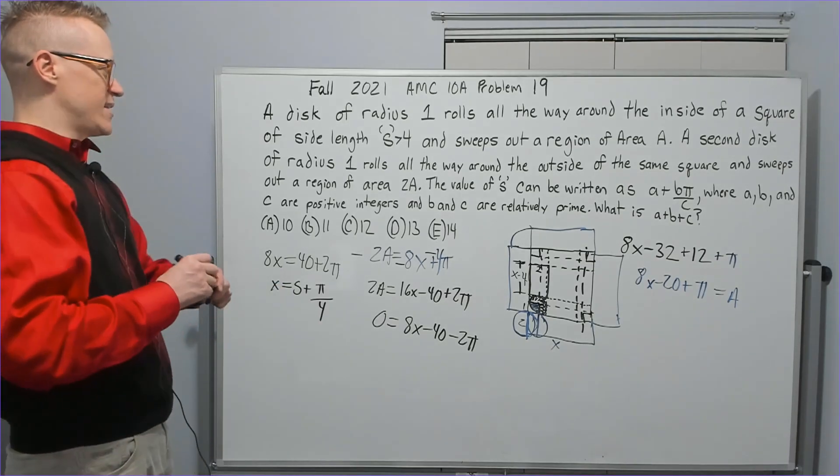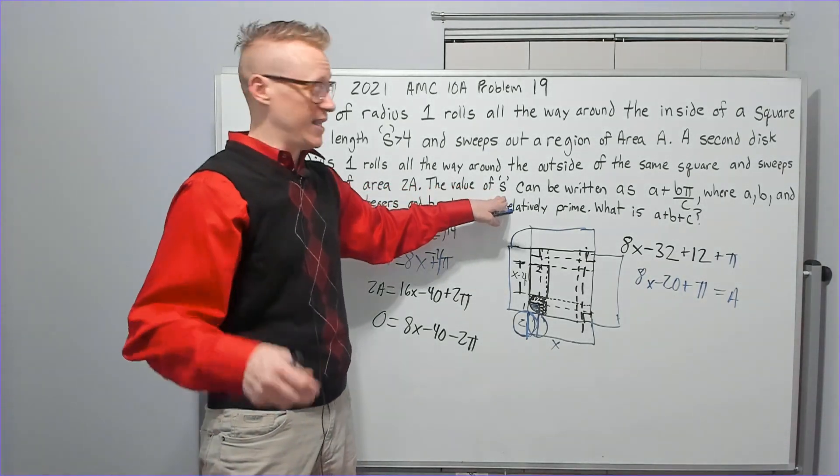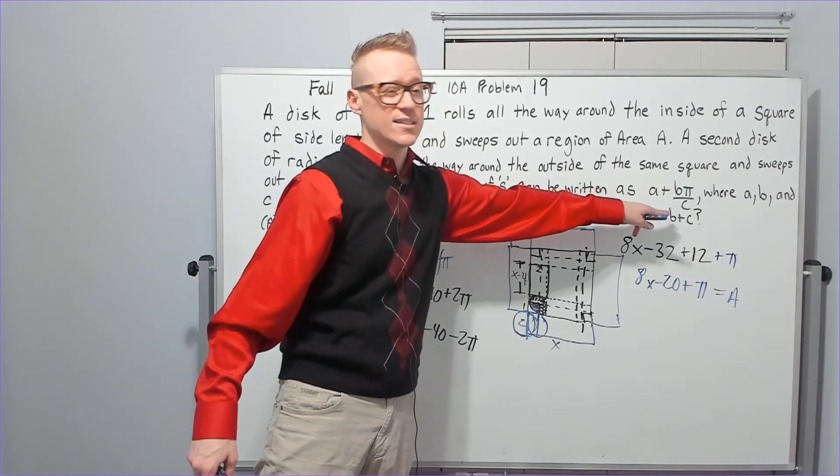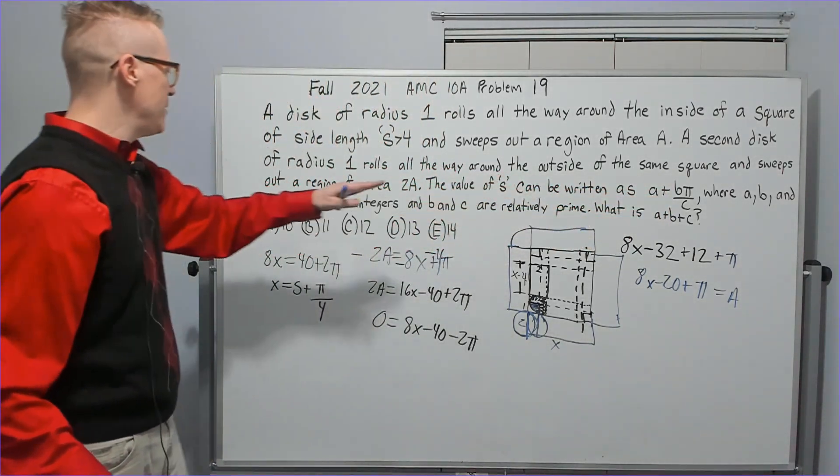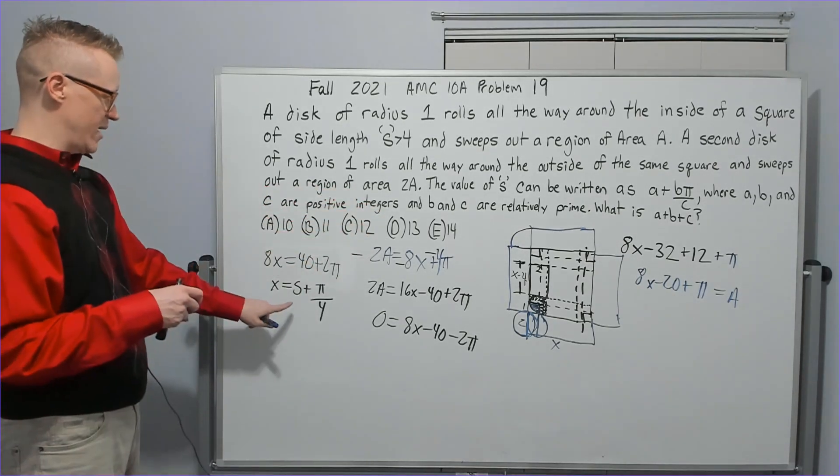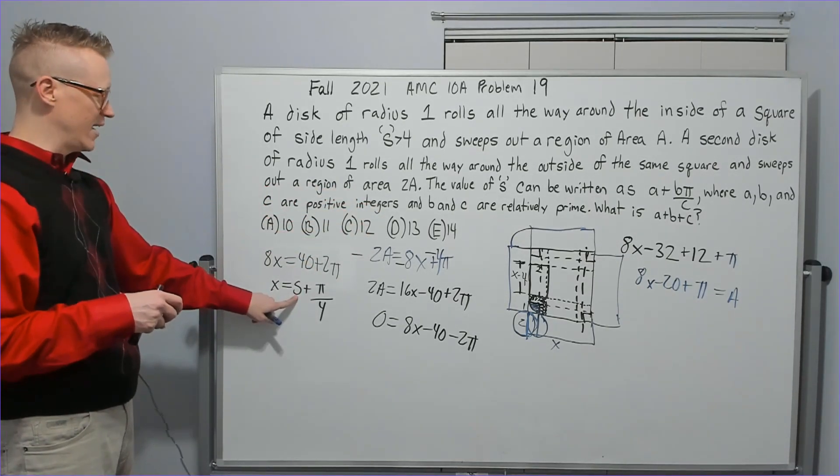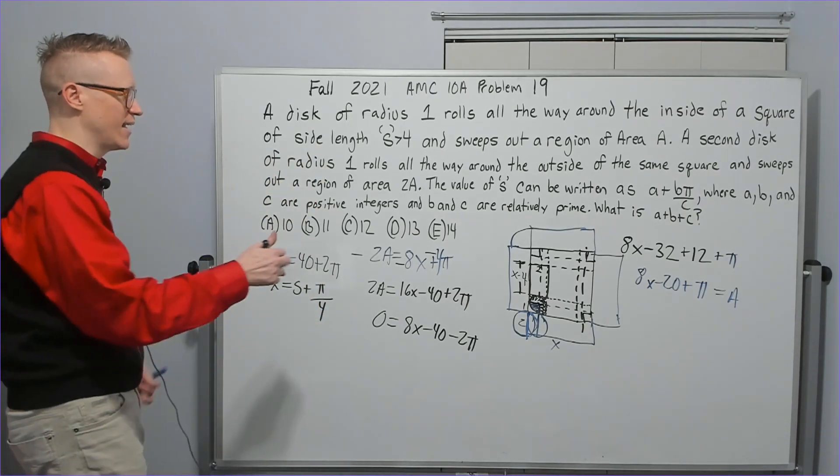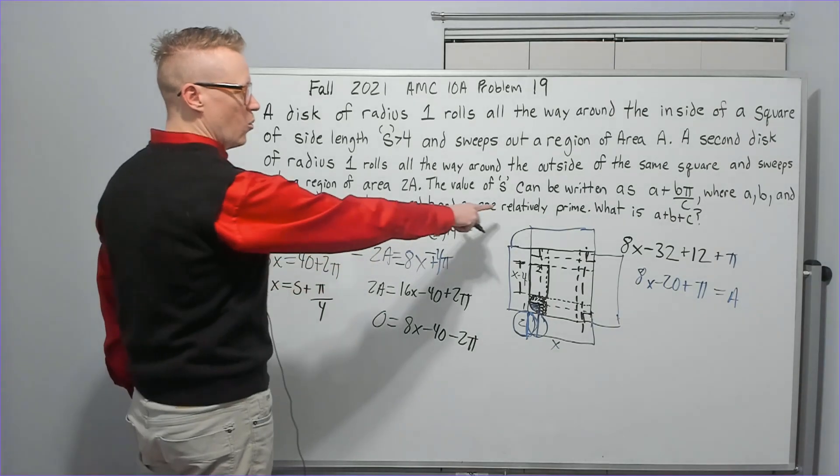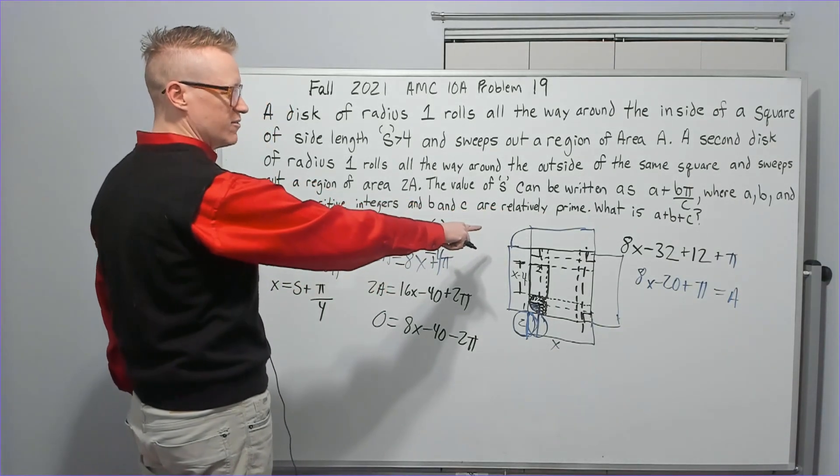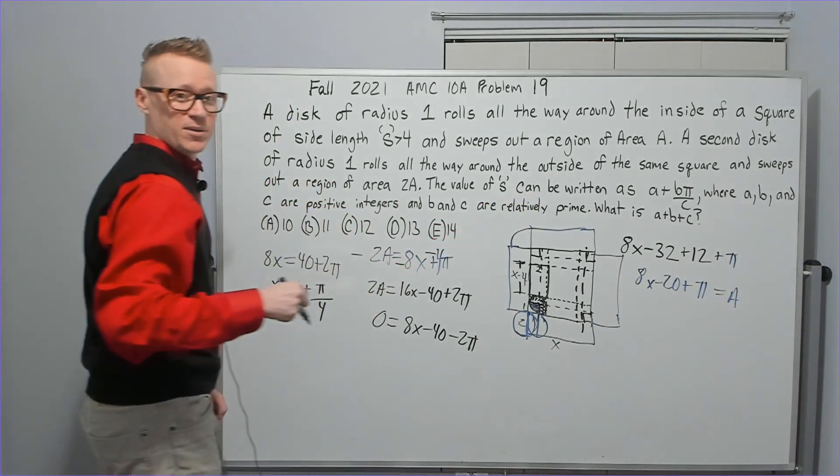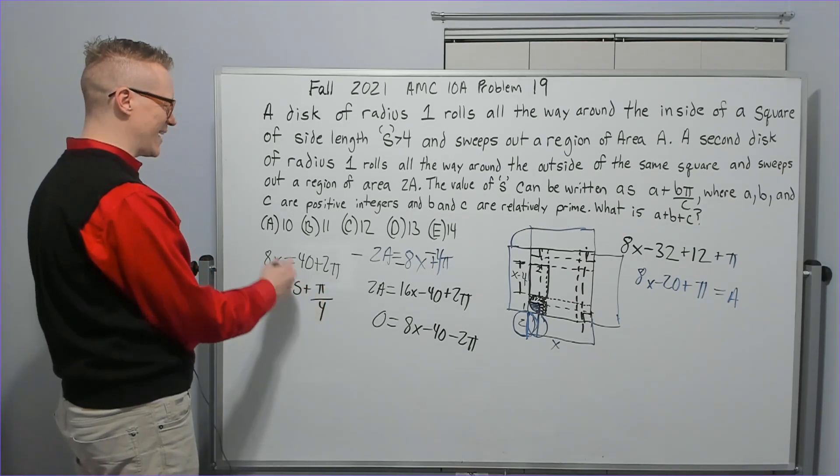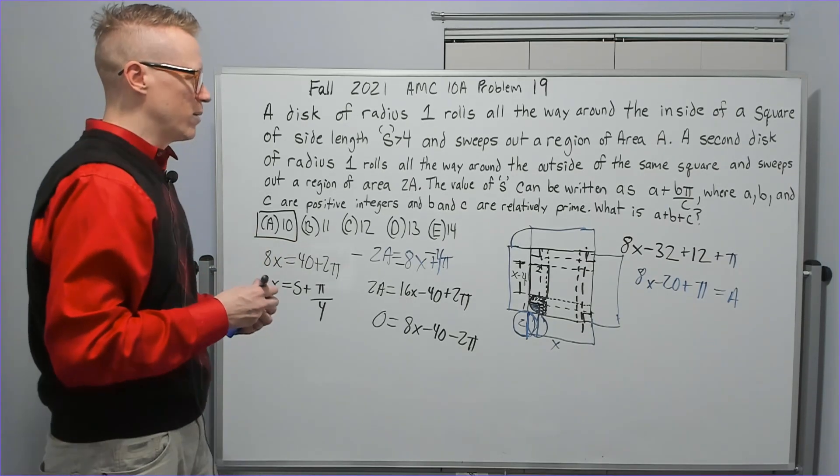All right, let's read what it says. The value of x for me can be written as a plus b π over c, where a, b, and c are positive integers. So we have 5, not s, 5 plus 1 π over 4. That's my a, b, and c. a, b, and c are relatively prime. What is a plus b plus c? 5 plus 1 plus 4 is 10. That is going to be our answer.